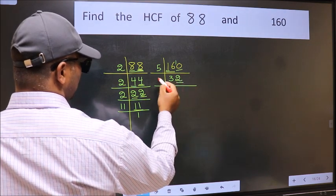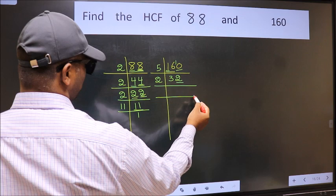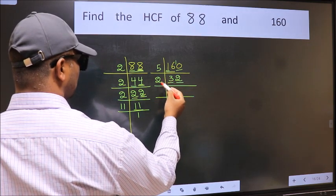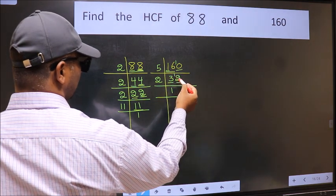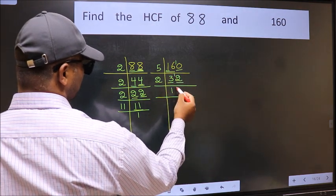Last digit 2 is even, so take 2. First number 3, a number close to 3 in 2 table is 2 once 2. 3 minus 2, 1, 1 carried forward 12. When do we get 12 in 2 table, 2 sixes 12.